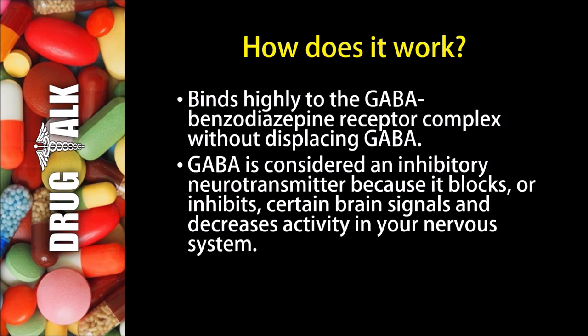So how does lorazepam or Ativan work? It binds highly to the GABA benzodiazepine receptor complex without displacing GABA. GABA is considered an inhibitory neurotransmitter because it blocks or inhibits certain brain signals and decreases activity in your nervous system.